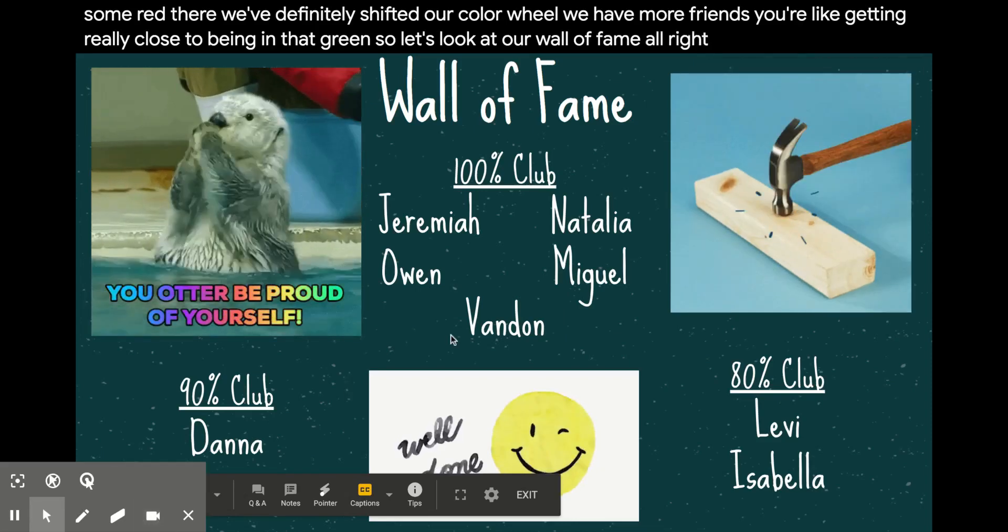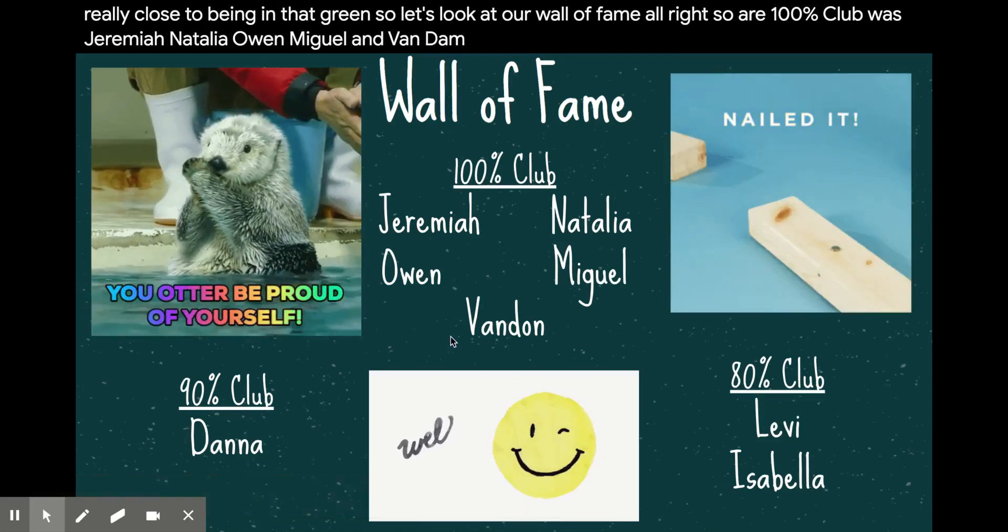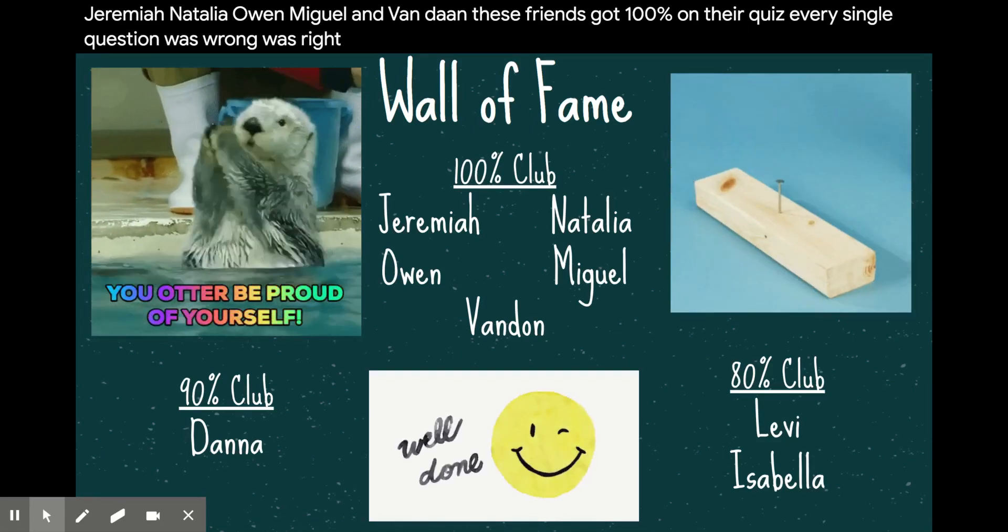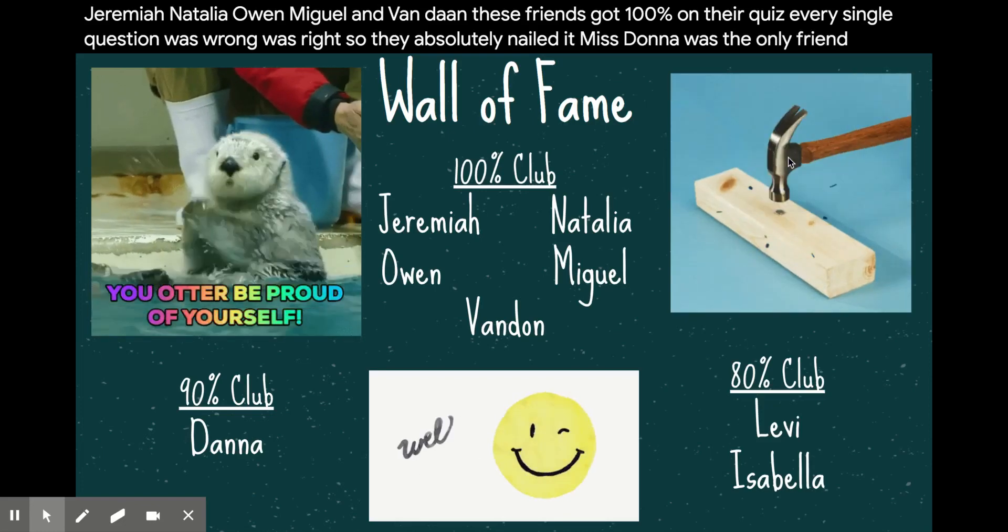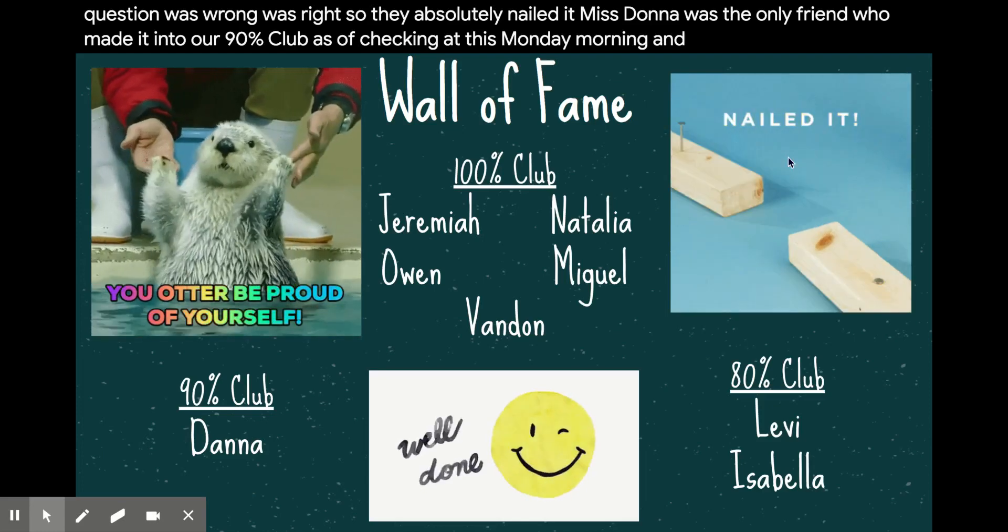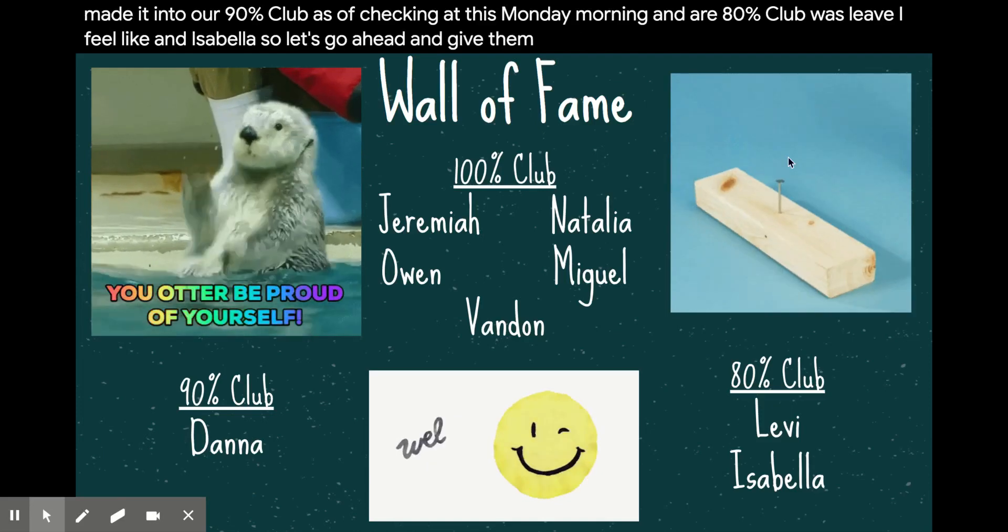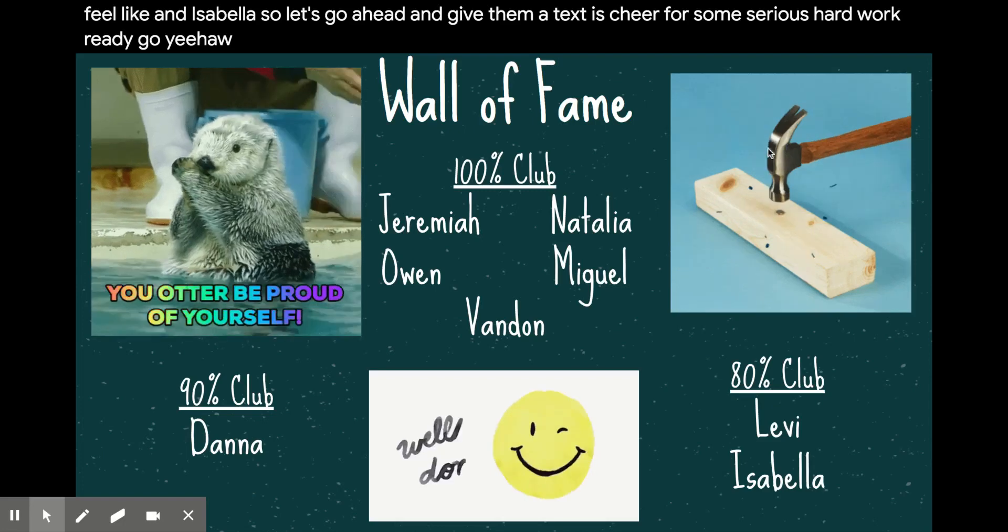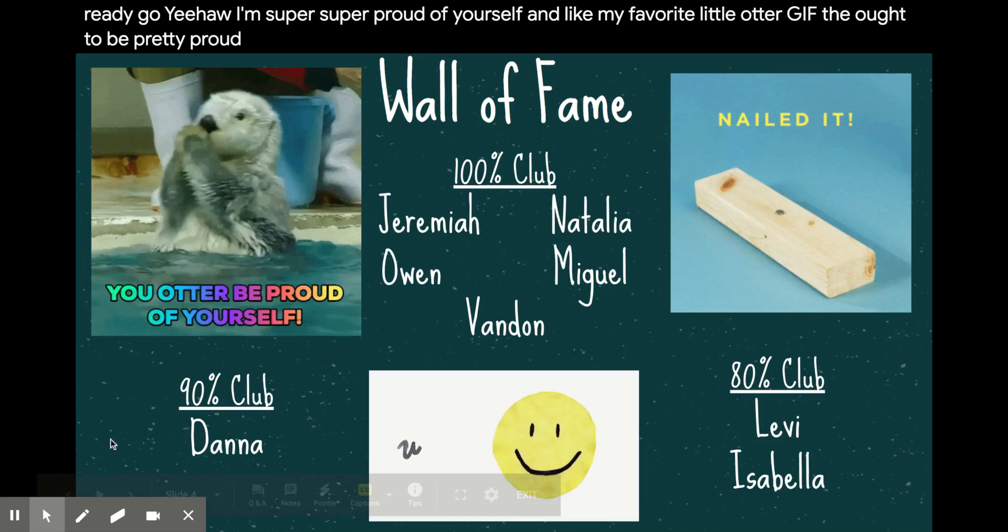All right. So our 100% club was Jeremiah, Natalia, Owen, Miguel, and Van Don. These friends got 100% on their quiz. Every single question was right. So they absolutely nailed it. Miss Donna was the only friend who made it into our 90% club as of checking it this Monday morning. And our 80% club was Levi, Felix, and Isabella. So let's go ahead and give them a Texas cheer for some serious hard work. Ready, go. Yeehaw. I'm super proud of you. You ought to be pretty proud of yourself, my friends.